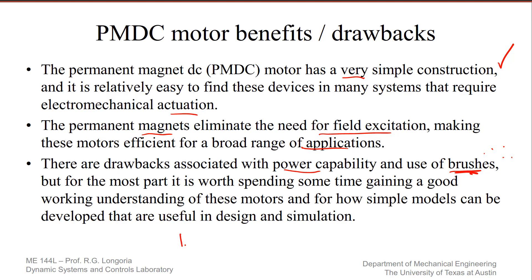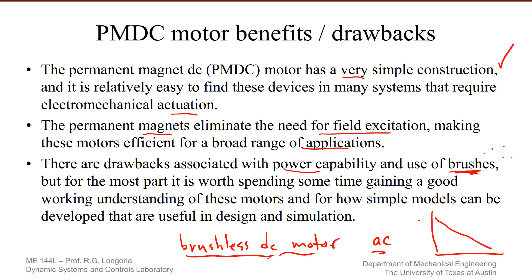That's why the brushless DC motor — which is kind of a misnomer — brushless DC motors are actually AC motors. One of the reasons they're called brushless DC is that even though they're AC motors, they have a nice torque-speed characteristic at steady state that looks a lot like brushed DC motors — in other words, you get a nice high torque — but these do require power electronics to run them.